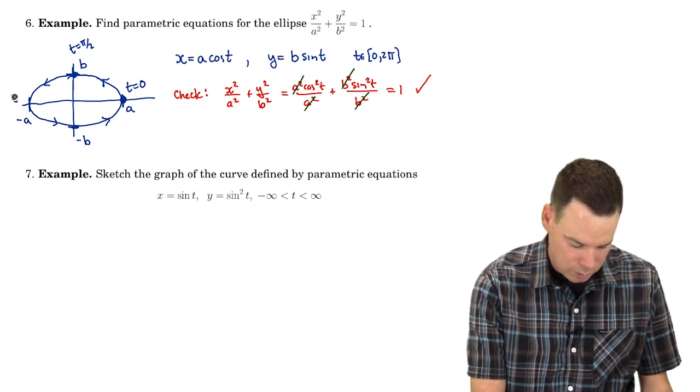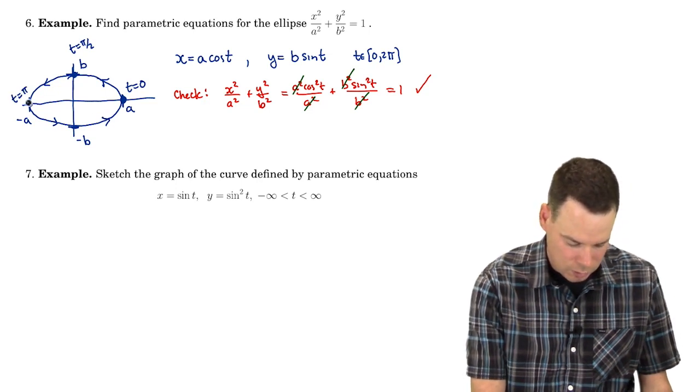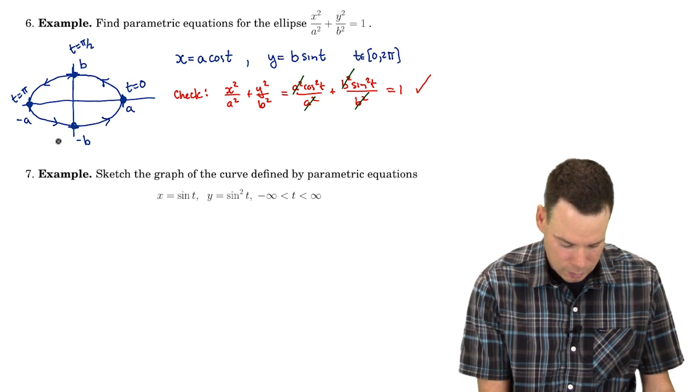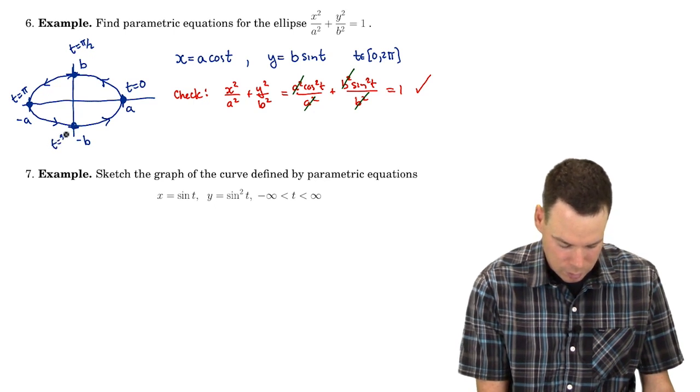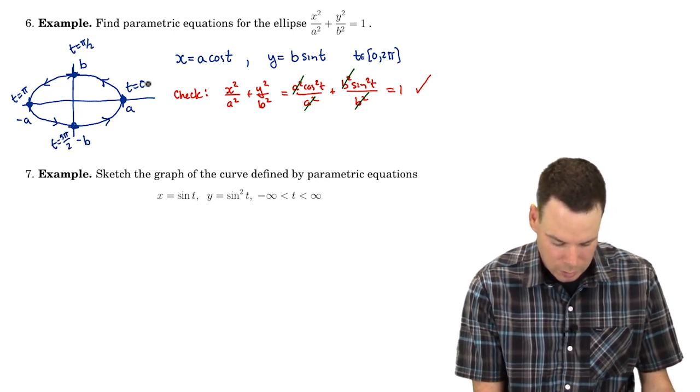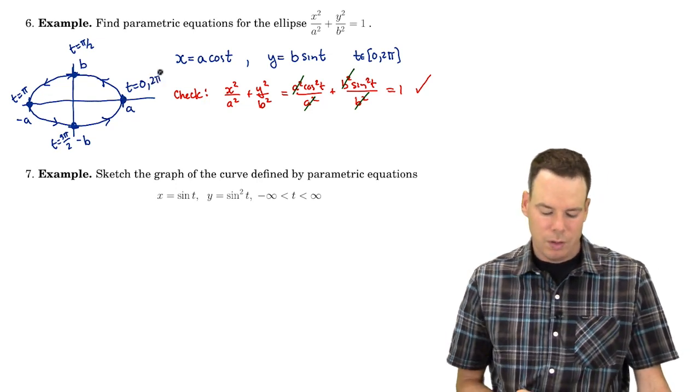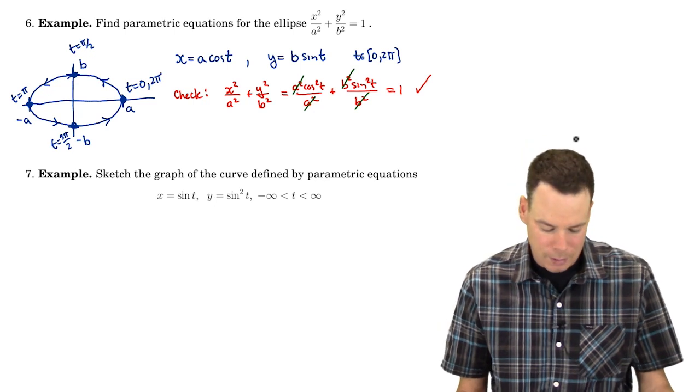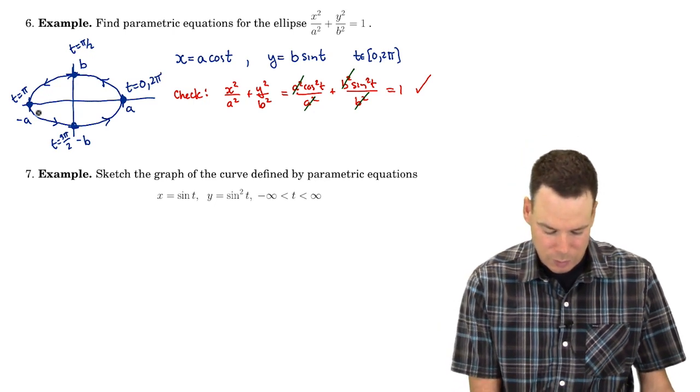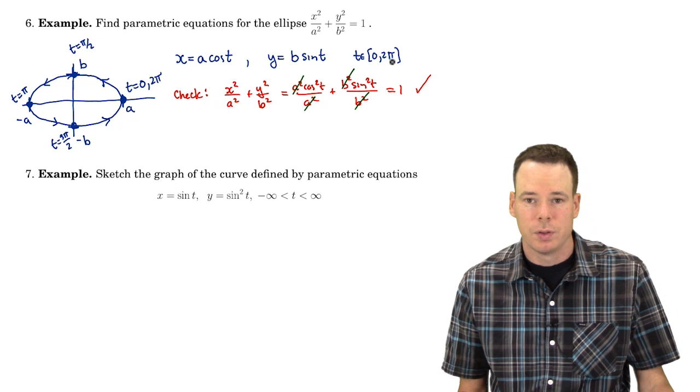We can fill in some other values. So that's t equals π over here. This is t equals 3π/2 and then we're back. Our initial point is also our terminal point which corresponds to the value of the parameter 2π. So we've parameterized the ellipse. We get it to sweep it out once over this interval 0 to 2π.